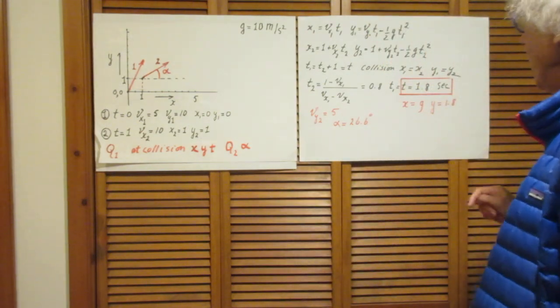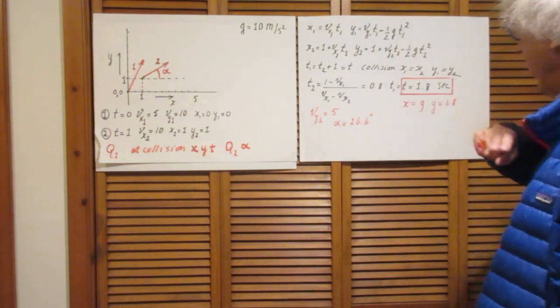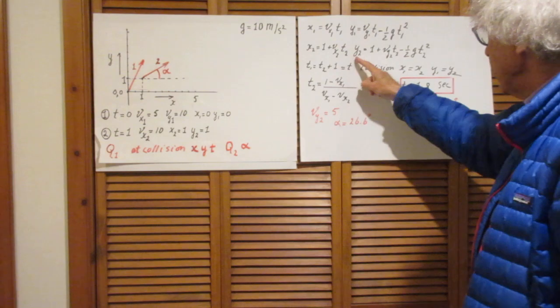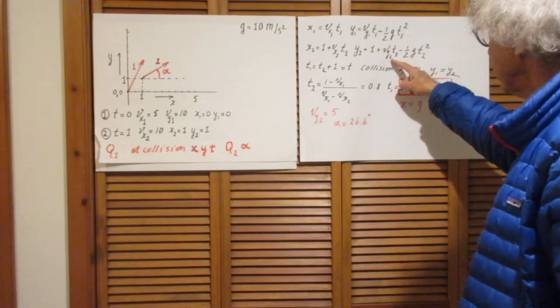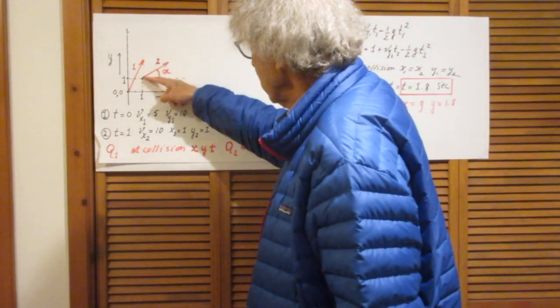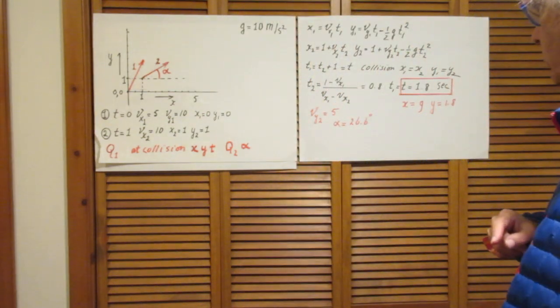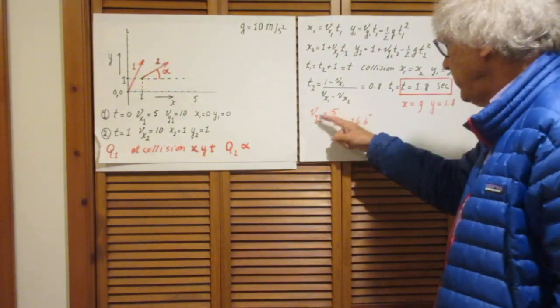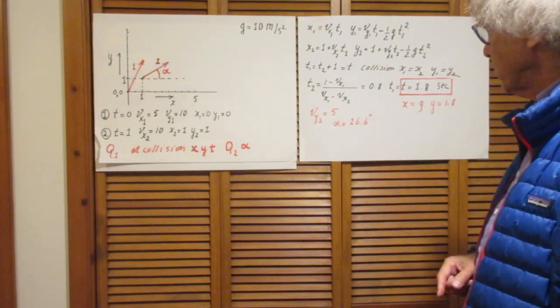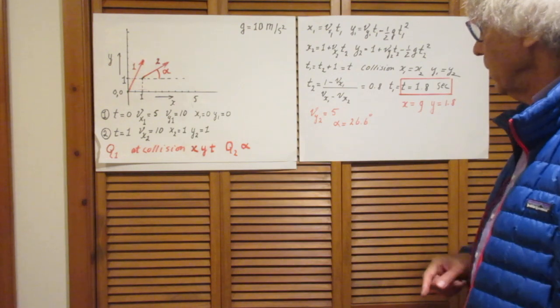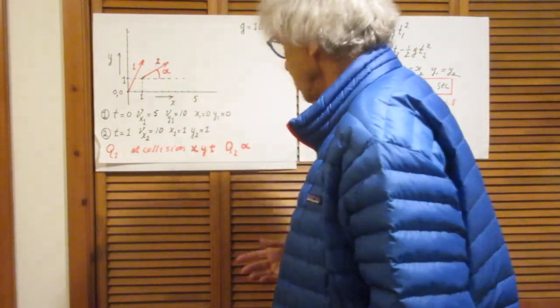Since you know this now, you can use this equation, because you know that y is 1.8, and so you can now solve for Vy2. That is the y component of speed in the y direction of object 2. You will find then that Vy2 is 5, and therefore the angle alpha, the tangent of the angle is then 5 divided by the 10. Problem solved.